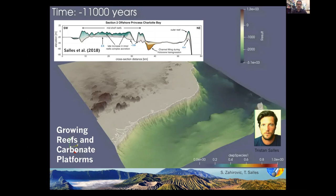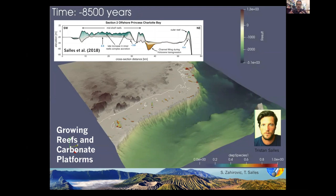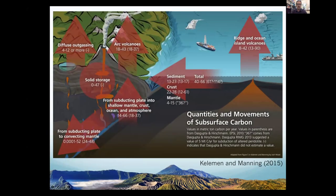Coral reefs are really interesting because as they live and grow, they actually produce CO2 — they're a net emitter of CO2. But because they build these carbonate platforms as they grow, they're actually sequestering CO2 on long geological timescales. We're trying to synthesize the components of the tectonic system of the deep carbon cycle, and now it's a good time to hand over to Kevin, who's been helping us quantify these components.